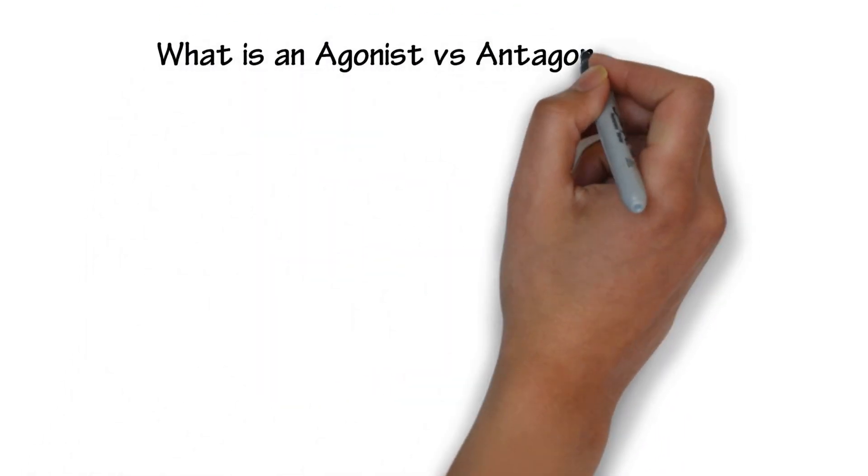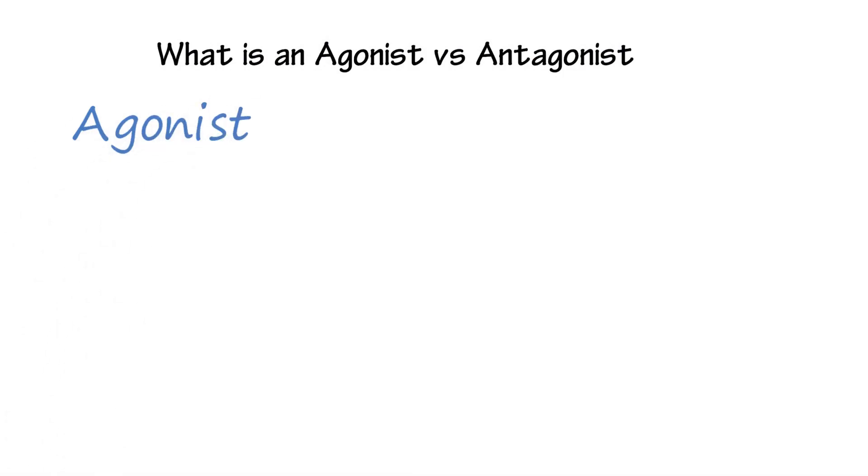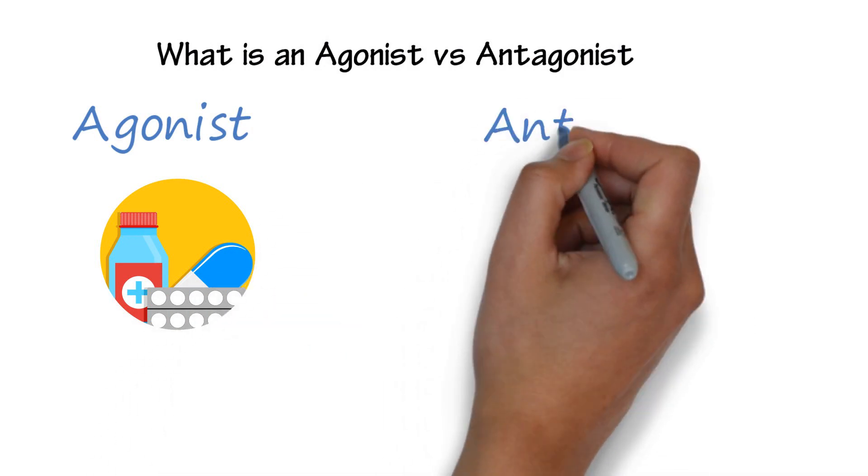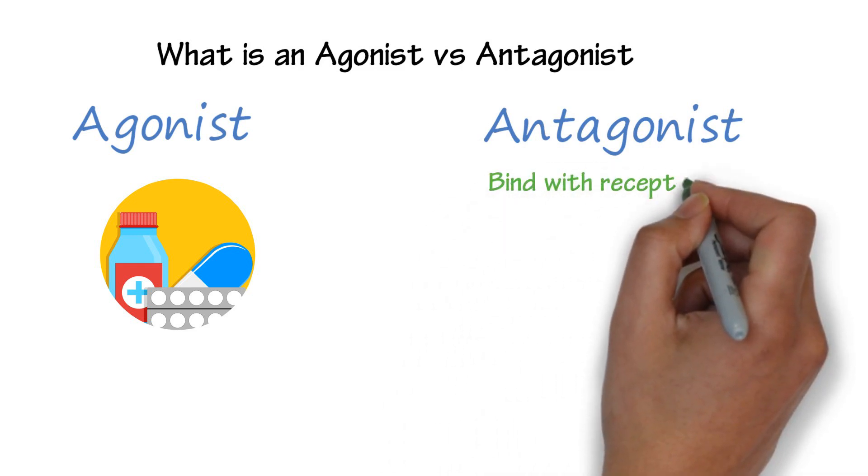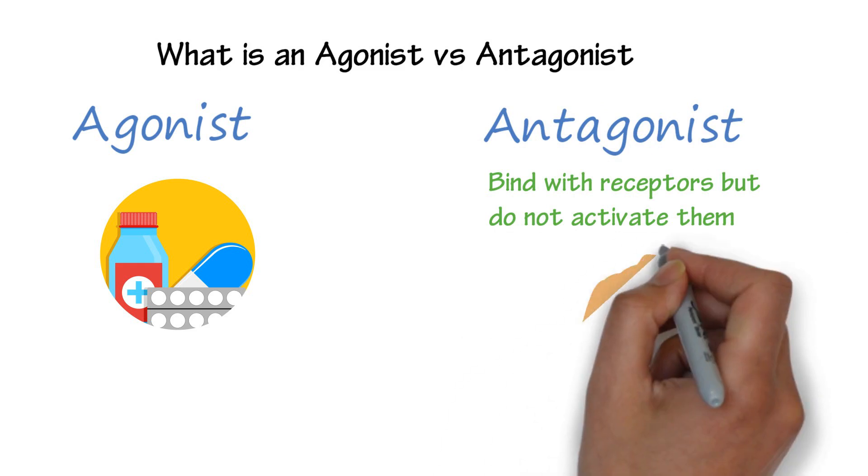What is an agonist versus antagonist? Agonists are drugs that activate receptors to accelerate or slow normal cellular function. Antagonists are drugs that bind with receptors but do not activate them. They block receptor action by preventing other drugs or substances from activating them.